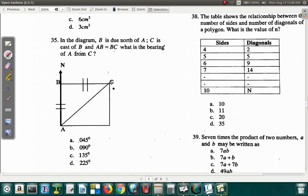When you say from C, it means C is where you're going to draw a north line, and the bearings are measured from north in a clockwise direction. So this is the angle you want to find. Now let's see what happens here.